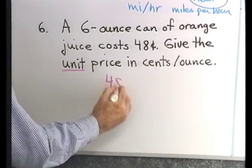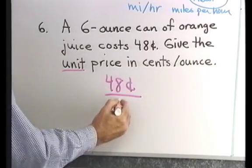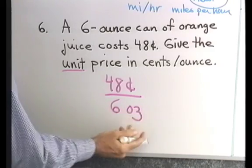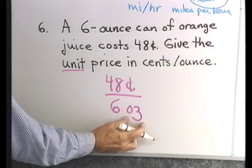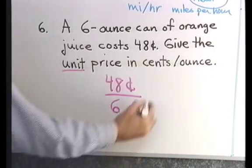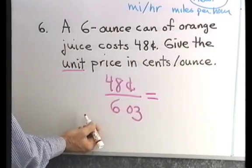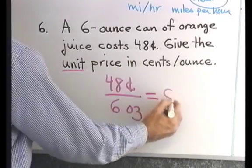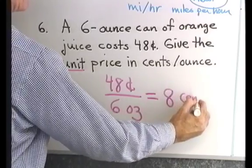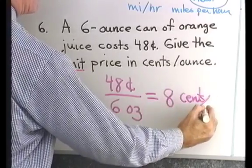So 48 cents on top and on the bottom I have 6 ounces — I'll abbreviate ounces as OZ. If I reduce this to lowest terms, 48 divided by 6 is 8. So the answer is 8 cents per ounce.